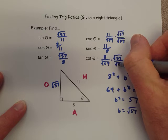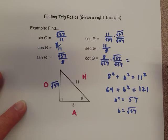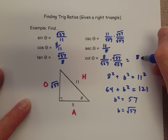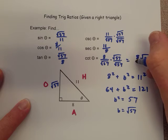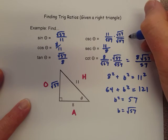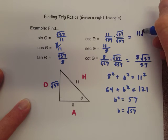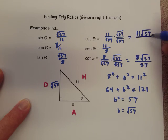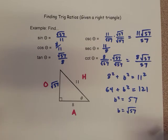We just express that as its most simplified form over here, so 8 square root of 57 over 57 for our cotangent, and then here, 11 square root of 57 over 57 for the cosecant.